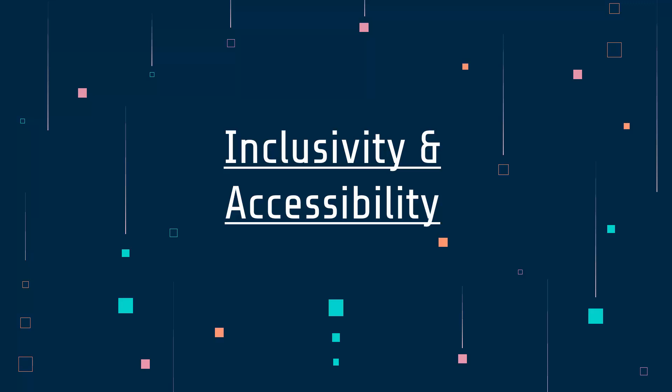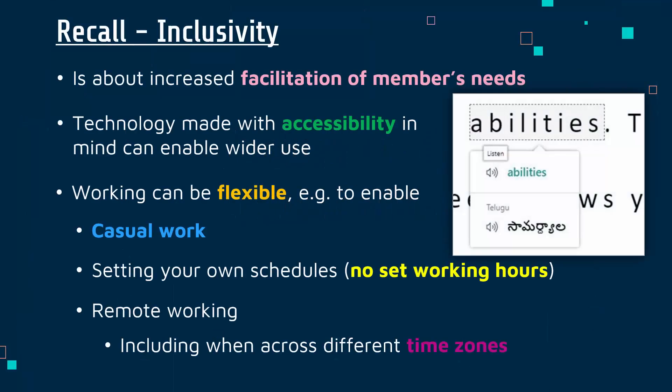We're now going to focus on a really important topic in computing which is all about how we are able to maximize use of technology to make things as inclusive and accessible as possible. I'll start with a recap slide because I have shown this before in a video on modern teams. Inclusivity as a term is very general — it's just about trying to maximize your ability to meet all of your team members, clients, or customers' individual needs.